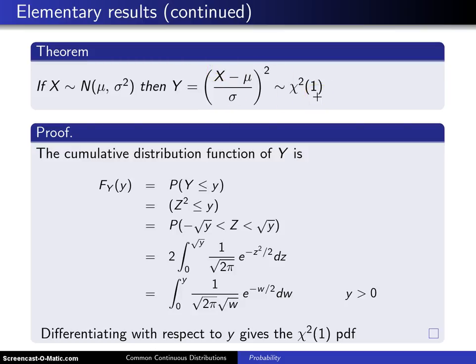The proof uses the cumulative distribution function technique. We begin by looking at the random variable Y and its CDF: F_Y(y) equals the probability that Y is less than or equal to y. This follows from the definition of the cumulative distribution function.